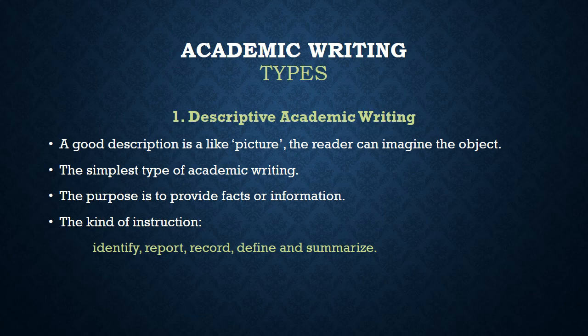Descriptive academic writing is the simplest type of academic writing. You can write an article and describe or explain it in the simplest way so that your reader can imagine it. You need to apply the critical thoughts and word choices discussed in the first lecture, but here you can write in the simplest way possible.